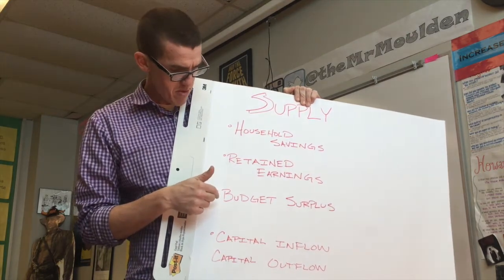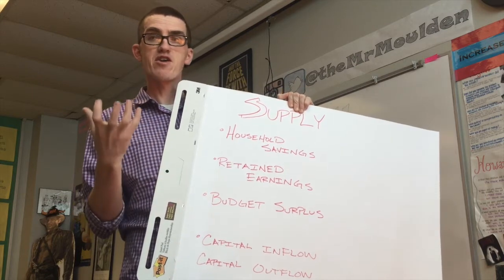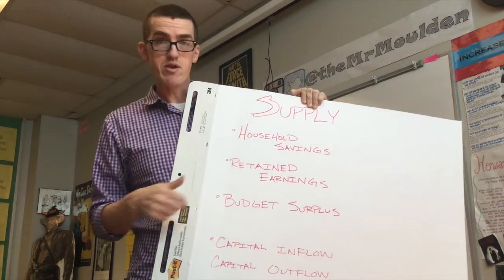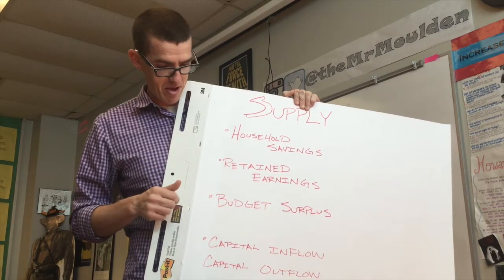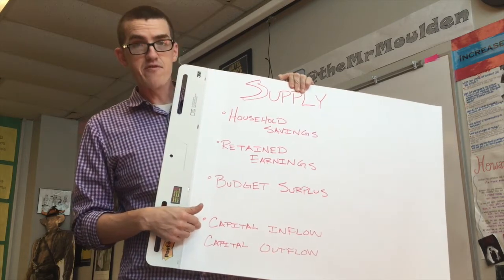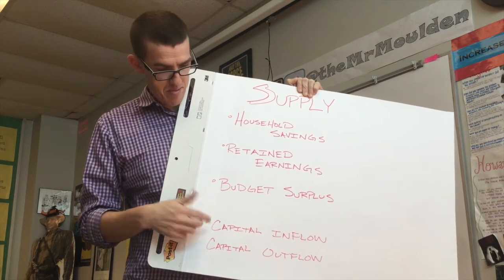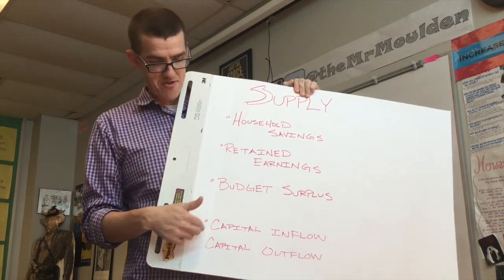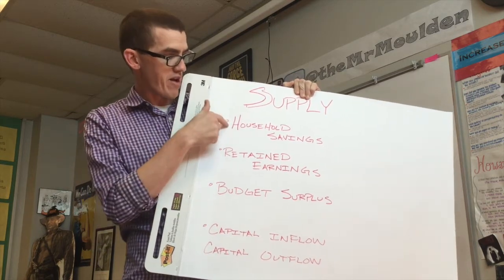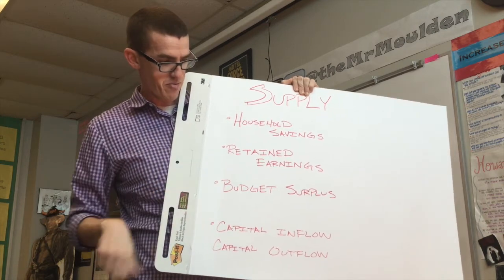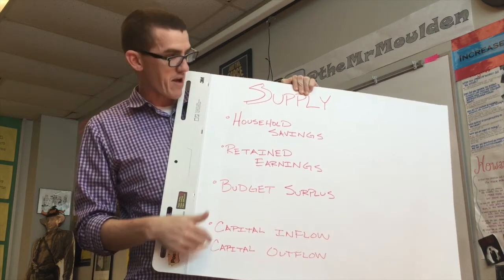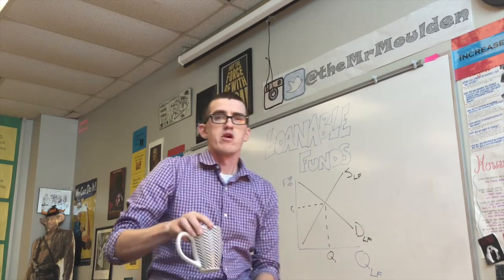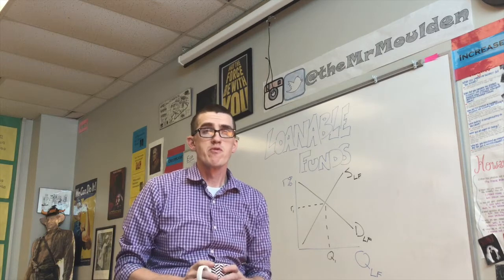Budget surpluses by the government increase supply — when the government has extra money it goes into the Federal Reserve, the banker's bank, increasing savings across all banks and the supply of loanable funds. Foreign direct spending also matters: when money comes in it's called capital inflow, which increases supply; when it goes out it's capital outflow, which decreases supply. So the four supply shifters are household savings, business retained earnings, government budget surpluses, and capital inflow and outflow.